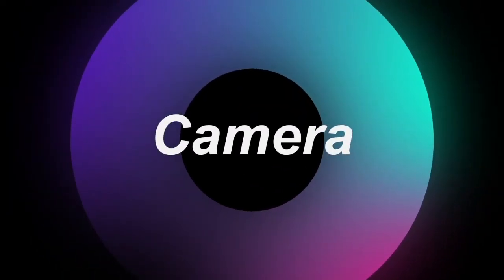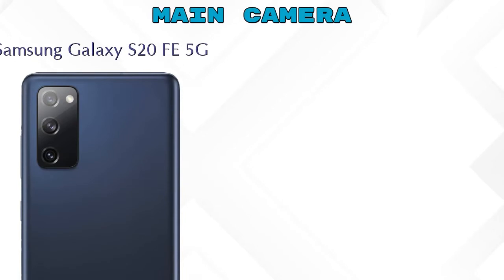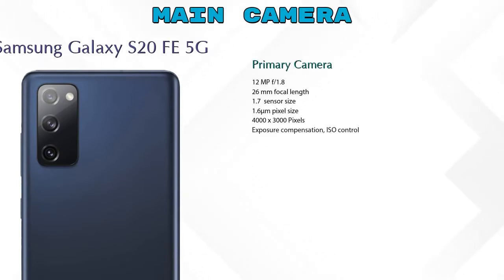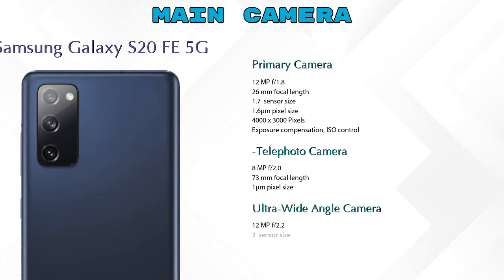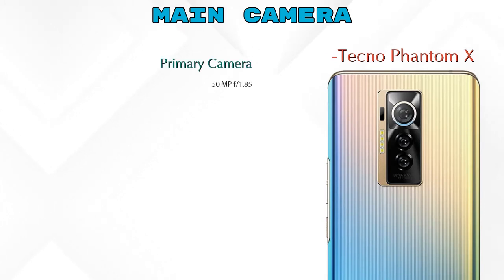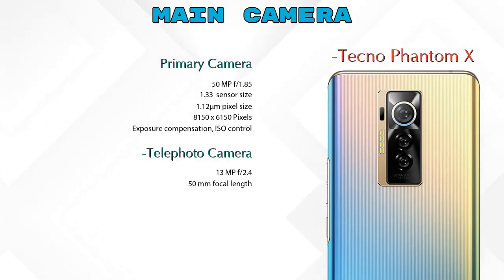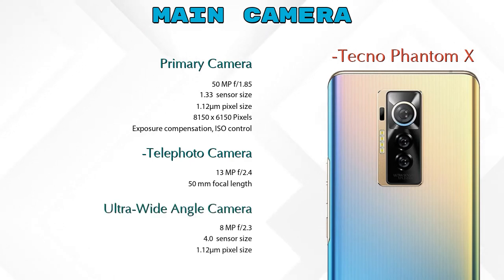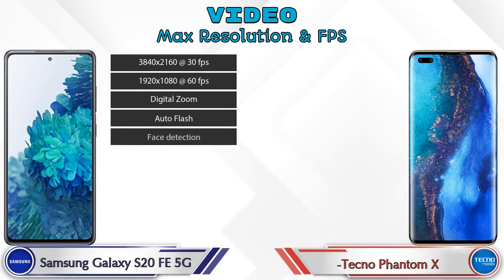Let's see the details about our favorite feature: the camera. First, talking about the rear camera — the S20 FE 5G has three cameras: a primary camera, a telephoto camera, and an ultra-wide angle camera. The Phantom X also has three cameras: a primary camera, a telephoto camera, and an ultra-wide angle camera. For video, both phones have eight different types of features available.